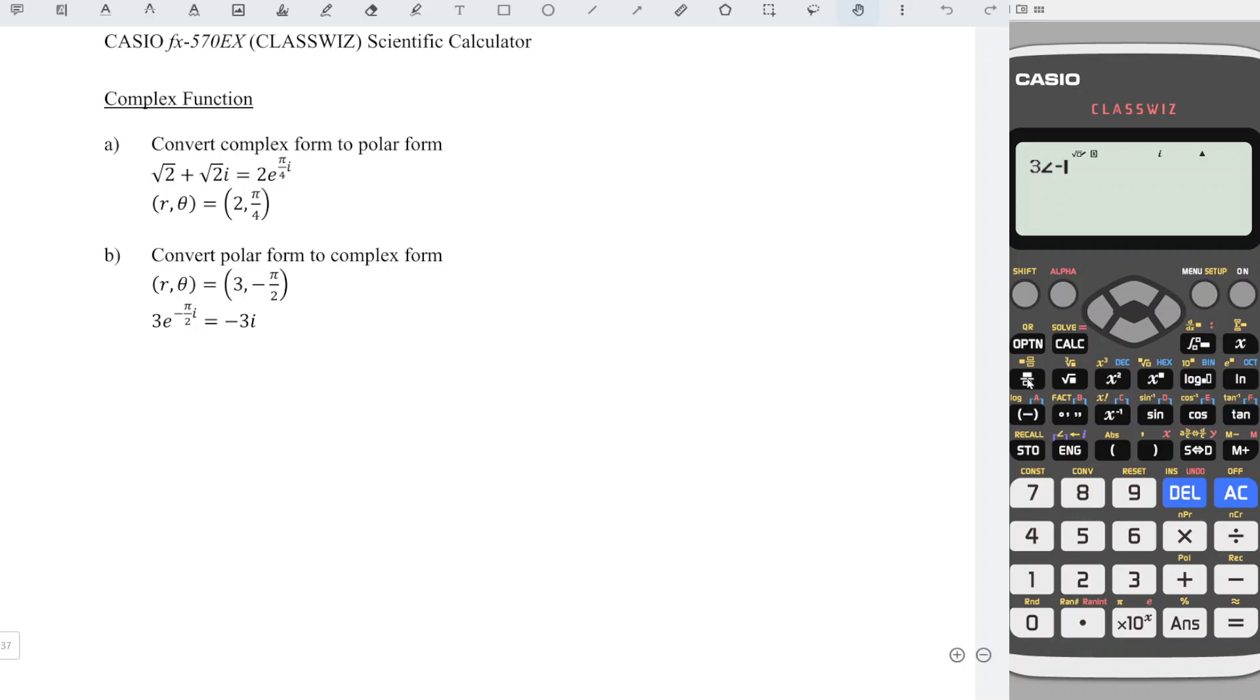We have to bear in mind that by default this is in terms of degree, but what we have here is in terms of radian. So we press option, down, down, change the angle unit number two, change to radian, and we press equal.